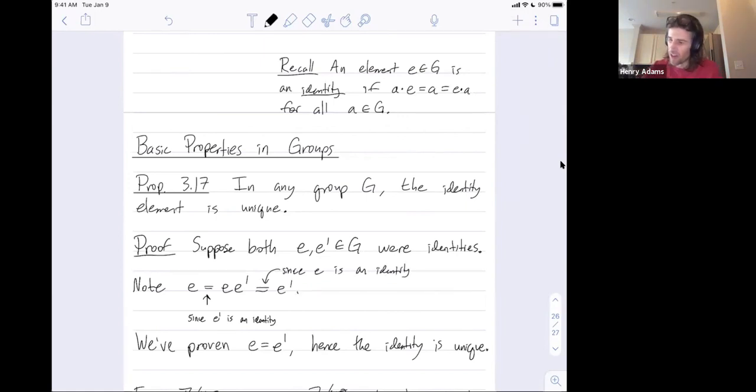So we have proven that E is equal to E prime, because E is equal to E times E prime because E prime is the identity so it doesn't change E, and then we explain how E times E prime is equal to E prime because E was the identity, so multiplying E prime by E can't change E prime.